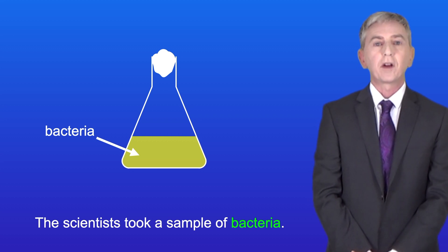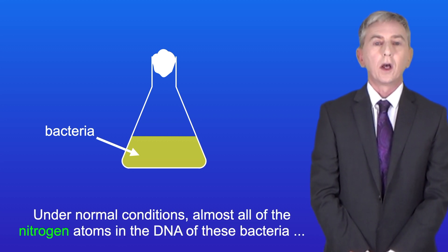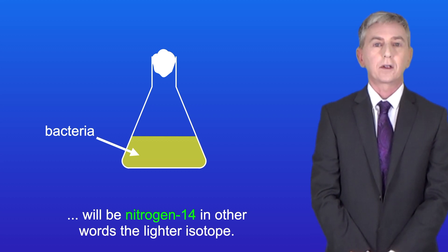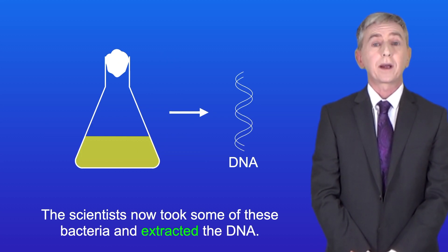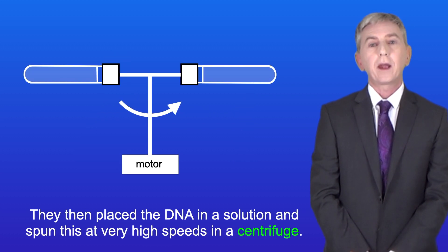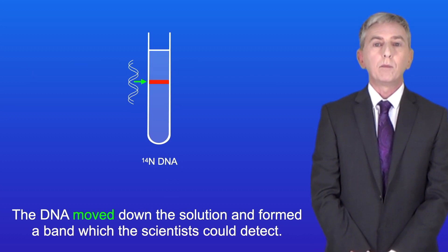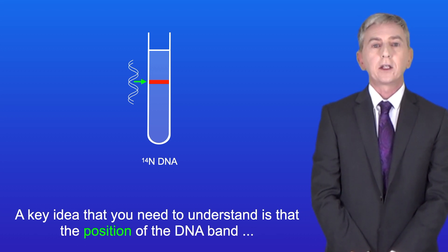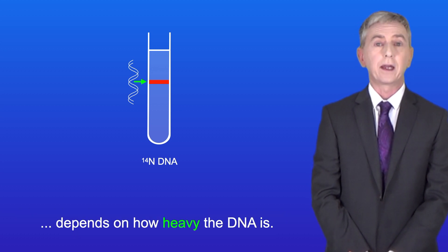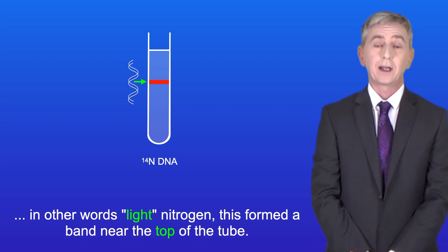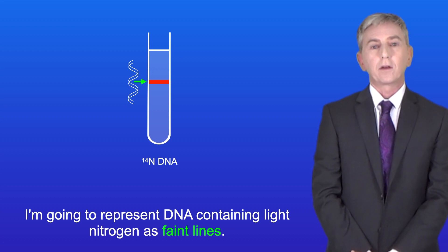The scientists took a sample of bacteria. Under normal conditions, almost all of the nitrogen atoms in the DNA of these bacteria will be nitrogen-14 — the lighter isotope. Some of these bacteria were taken and the DNA was extracted, then placed in a solution and spun at very high speeds in a centrifuge. The DNA moved down the solution and formed a band which the scientists could detect. The position of the band depends on how heavy the DNA is. Because the nitrogen was almost all nitrogen-14 — light nitrogen — the DNA formed a band near the top of the tube. I'm representing DNA containing light nitrogen as faint lines.